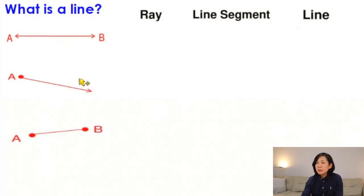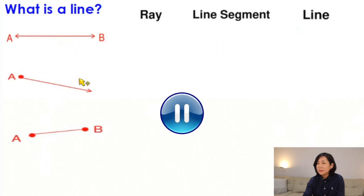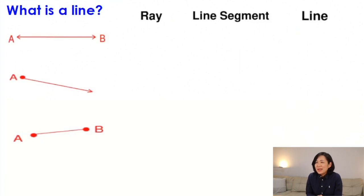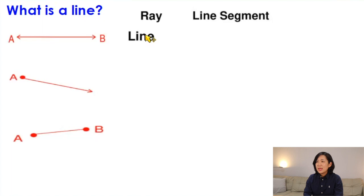First of all, have a look at the pictures — which one is a line? You can see three different lines and they all have different names: one is a ray, one is a line segment, and one is a line. Have a guess! The first one is a line, the second one is called a ray, and the last one is a line segment.